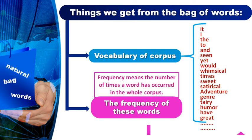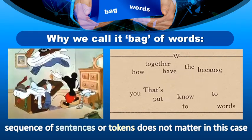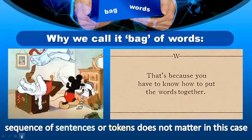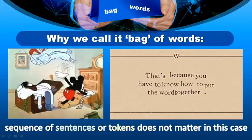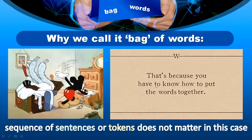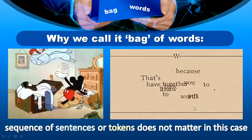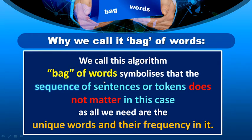After getting this information, keep one more thing in mind: the sequence of sentences or tokens does not matter in this model. This is the only reason this model is known as bag of words. Just like when we put things in a bag, we are not concerned about sequencing — we put everything in and close the bag. So this sequencing is not important. All we need are the unique words and their frequency — that's it.